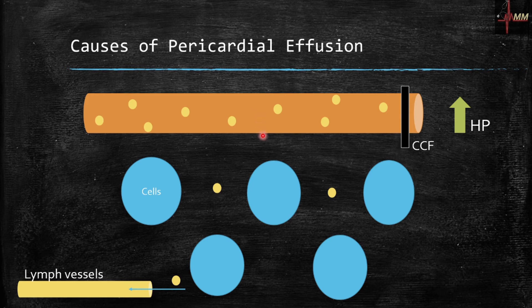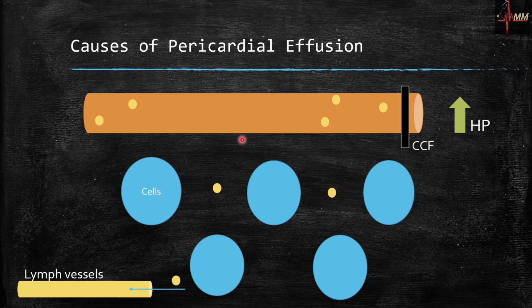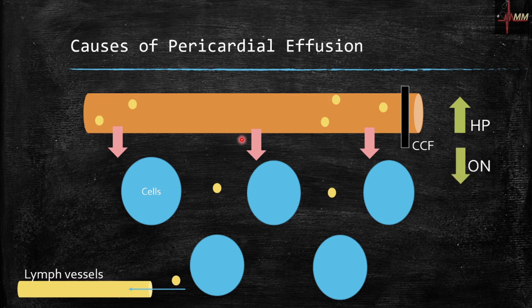What happens if you lose proteins from the blood vessels? There is decreased oncotic pressure, and this also pushes fluid out of the blood vessels. So decreased oncotic pressure is another cause of pericardial effusion.